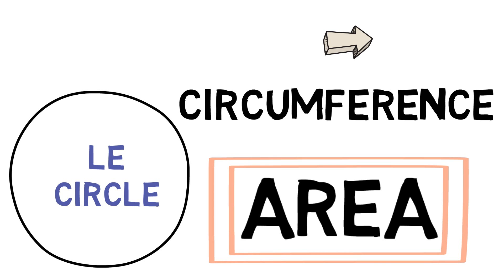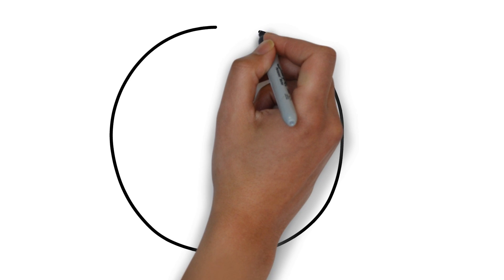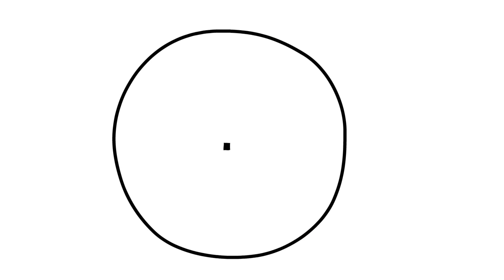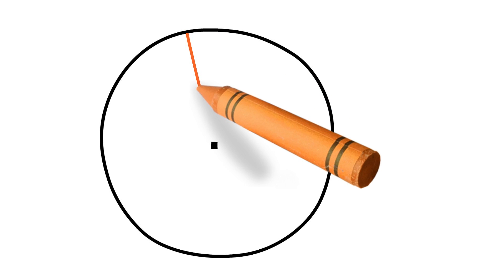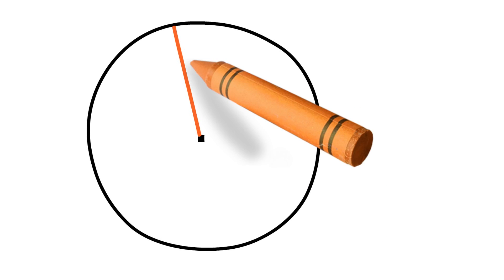We cannot do a calculation without a formula, right? Let me continue by drawing a circle on this blank canvas. Now let's draw a line from the center to a point on the circle like this. This, my friends, is the radius of the circle.